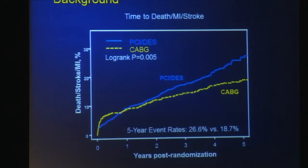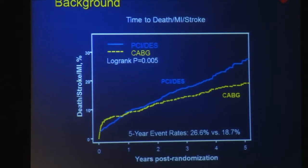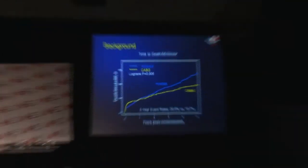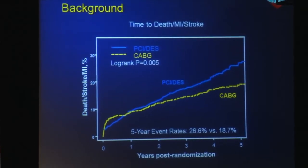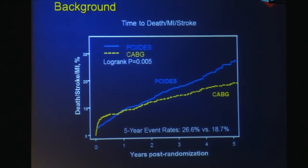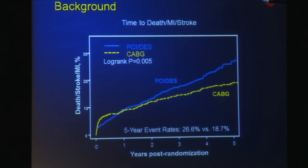As Dr. Fuster already presented, clinical results from the FREEDOM trial showed that for patients with diabetes and multivessel coronary artery disease, CABG, as compared with PCI using drug-eluting stents, was associated with significantly lower rates of death, MI, or stroke, with the benefit driven by significant reductions in both death and MI. This prospective economic evaluation was carried out alongside the FREEDOM trial to provide additional insight into the relative value of CABG versus PCI in the drug-eluting stent era from the perspective of the U.S. healthcare system.